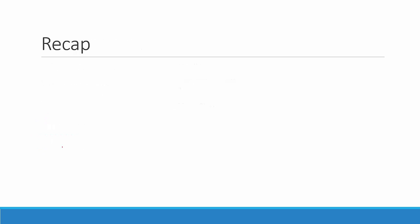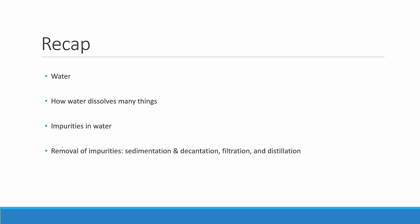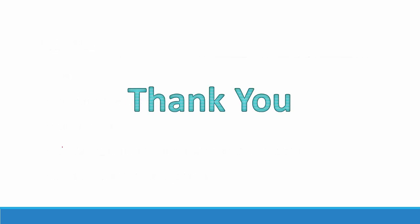This completes Part 2 of the chapter. We covered water — how it dissolves many things and why it is called a solvent; the different impurities brought into water; how to remove insoluble impurities through sedimentation, decantation, and filtration; soluble impurities through distillation; and how drinking water is processed at home and by the waterworks. If you have any doubts please comment below. Please like, subscribe, and share with your friends. Thank you.